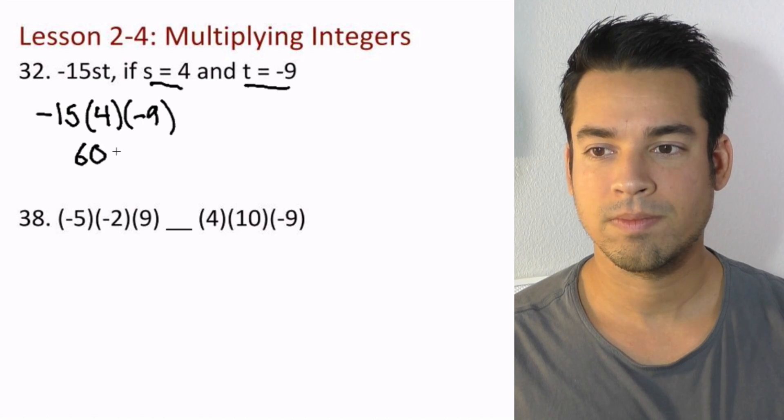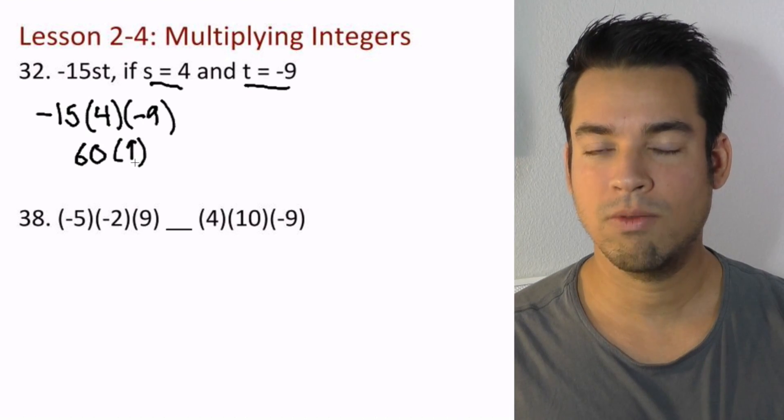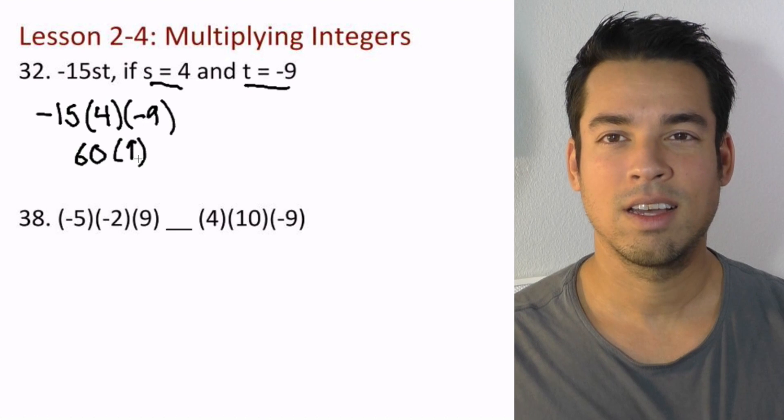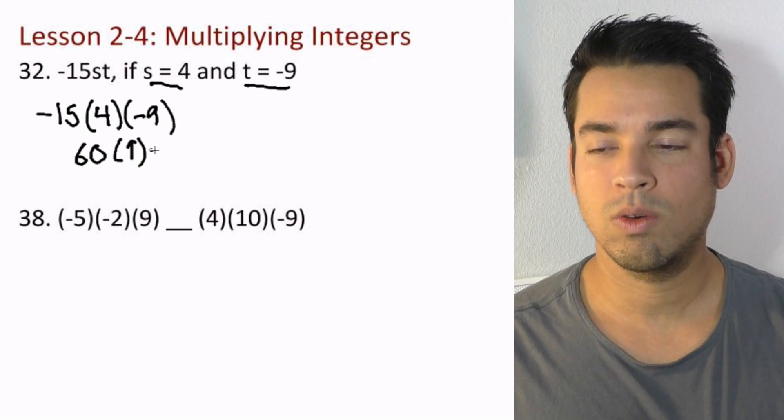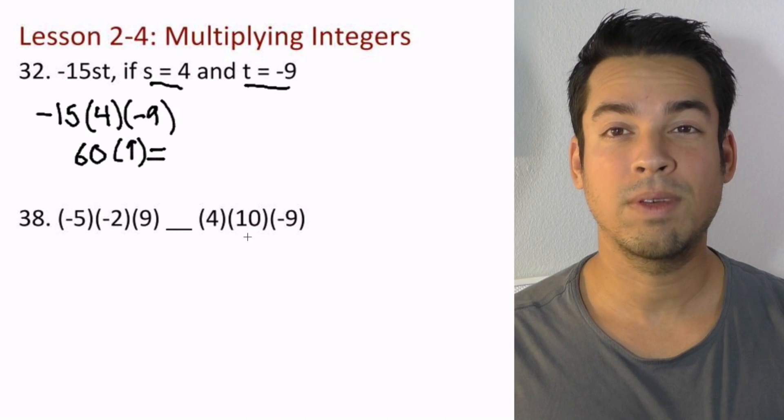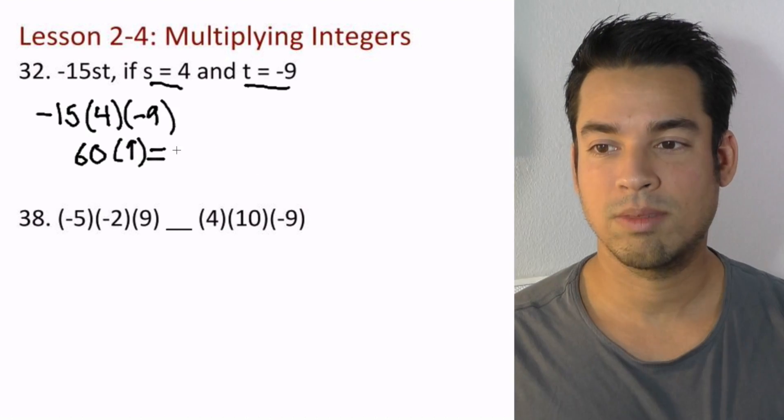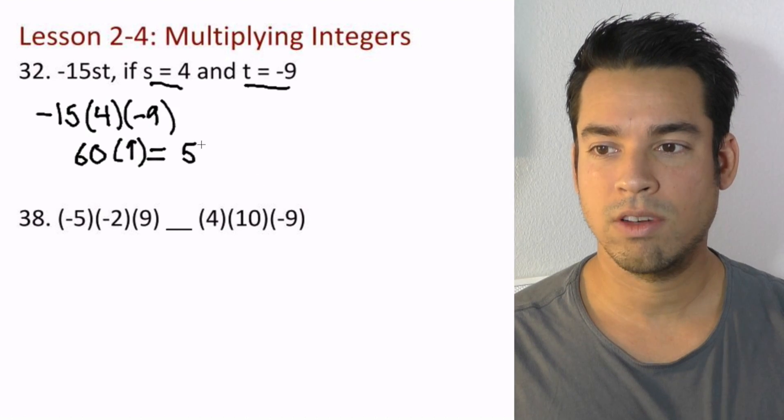I've already taken away the negatives because I know it's going to be positive. What's 9 times 60? Well, 9 times 6 is 54, so 9 times 60 is 540.